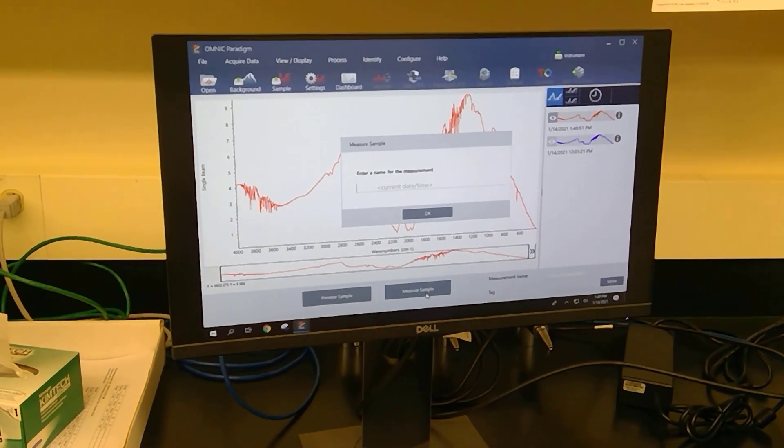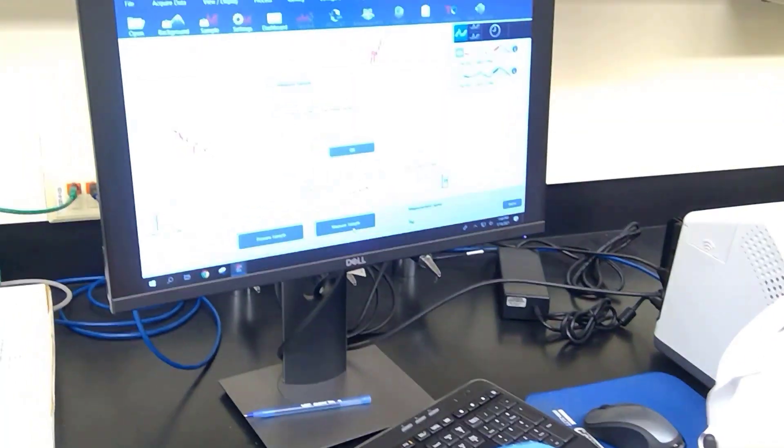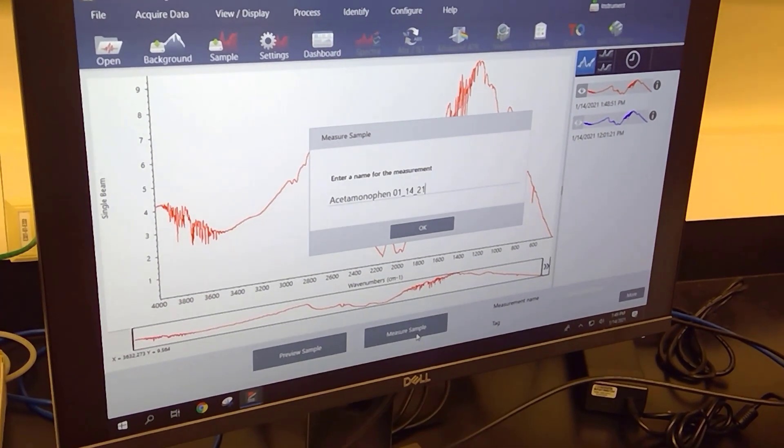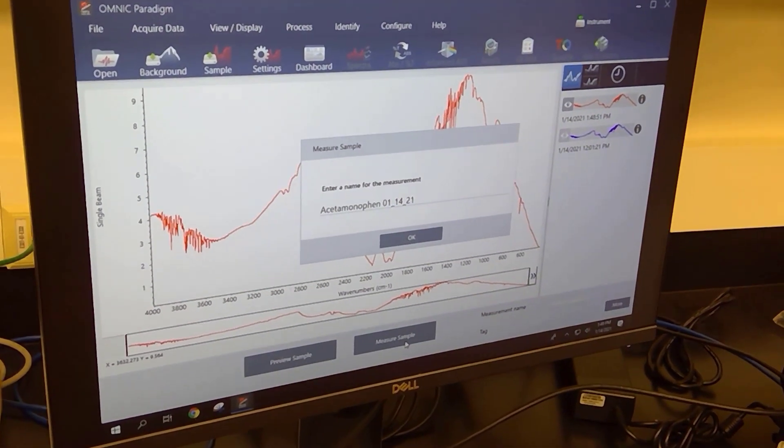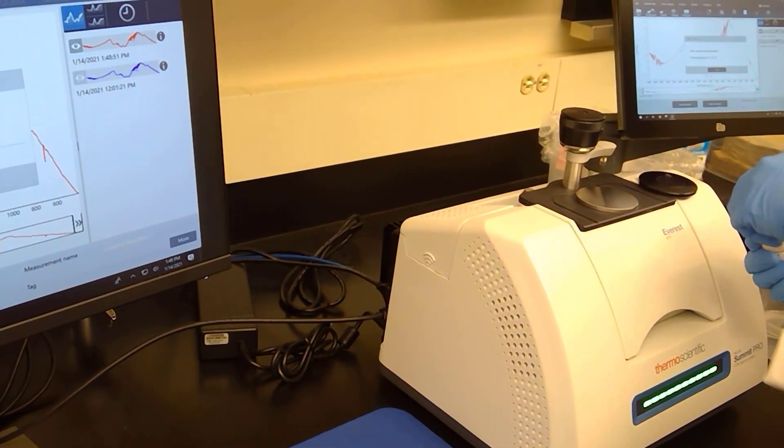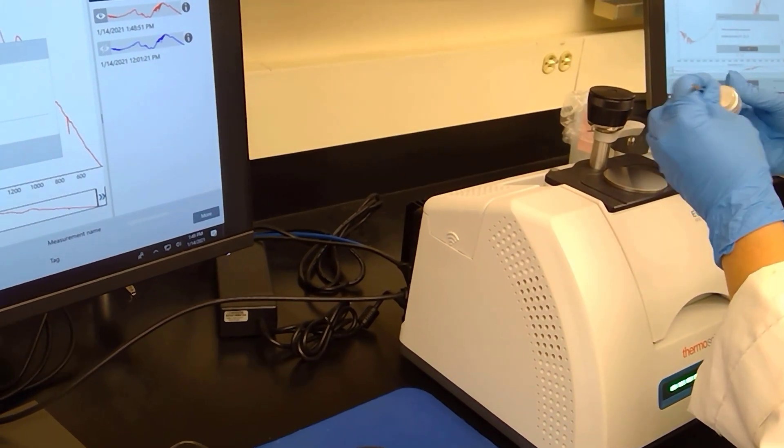We are going to ask the machine to measure a sample. We're going to add in the name here, so I will type in acetaminophen and I'm going to add in a date. Before I click okay, I'm going to add the sample to the sample zone.